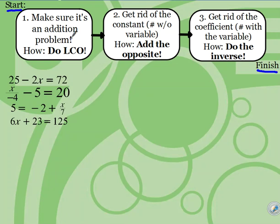The first step says make sure it's an addition problem. How we do that is we do LCO — leave, change, opposite. That's the strategy we use with subtraction. The second thing says to get rid of the constant. The constant is the one without the variable next to it. To get rid of the constant, we add the opposite. The next thing says we're going to get rid of the coefficient. The coefficient is the number right next to the variable, and to do that, we do the inverse. You're going to hear me talk about those terms — constant, coefficient — quite a few times this tutorial.